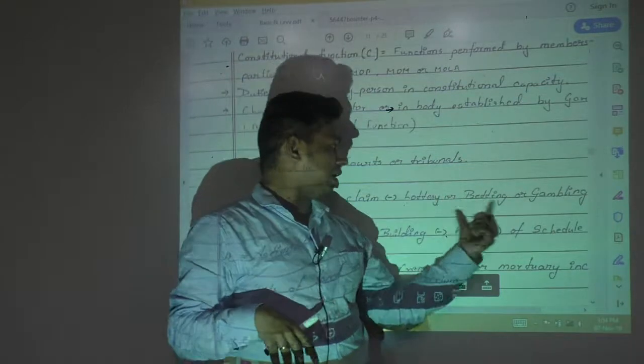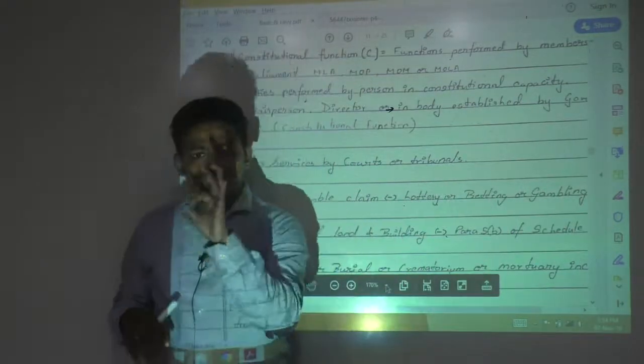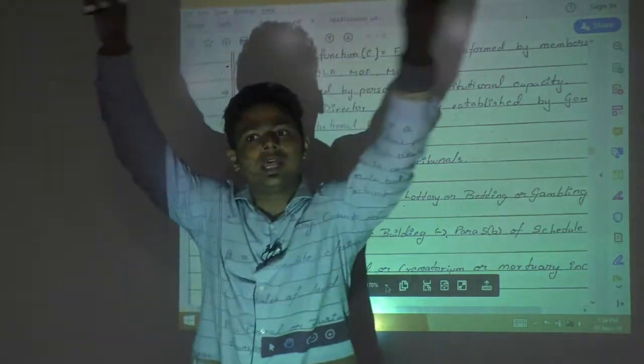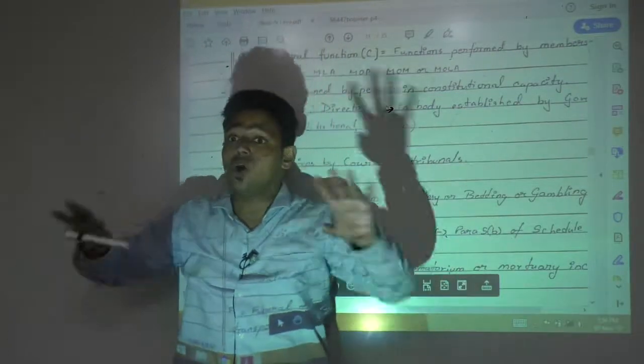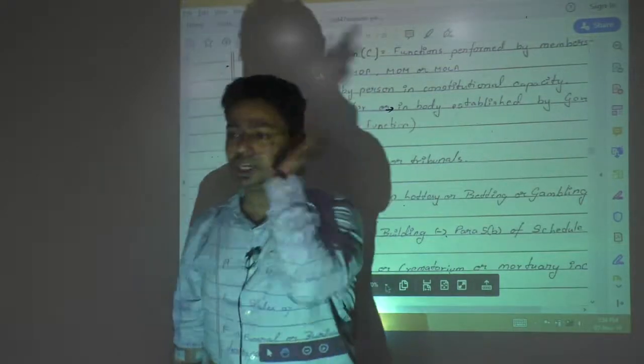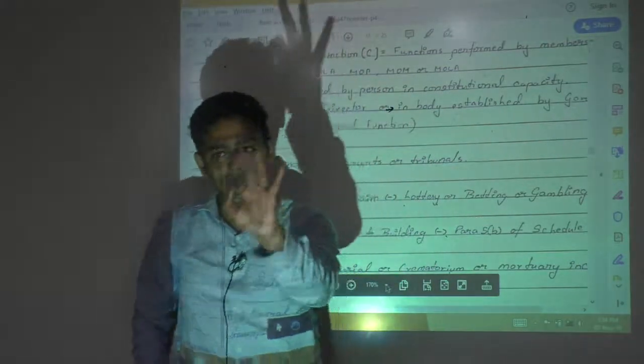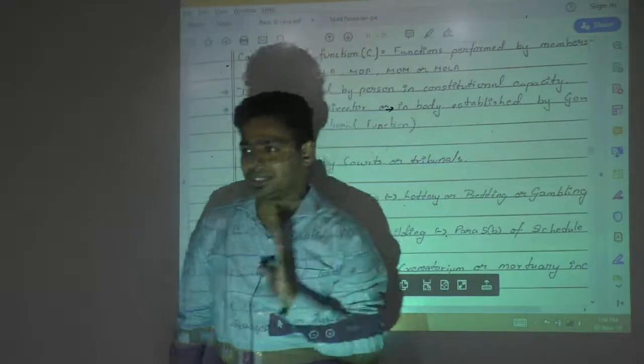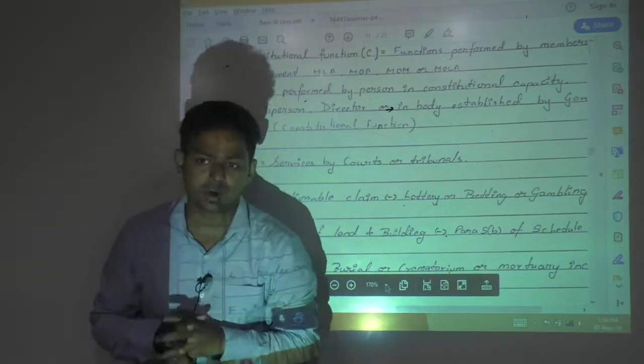And which 3 actionable claims? Betting, lottery, gambling. So what is happening you understand? All actionable claims are goods. All actionable claims are not taxable. Only 3 actionable claims are taxable. So technically only betting, gambling and lottery is taxable. Balanced actionable claims are not taxable.